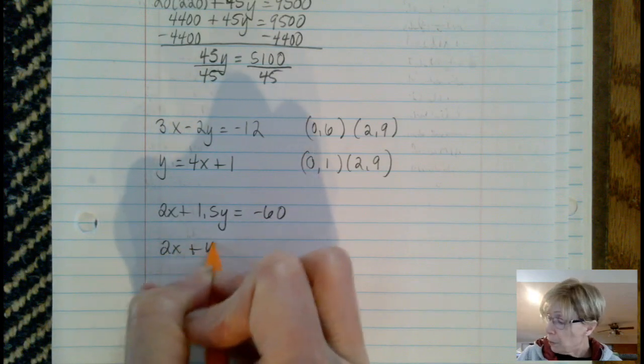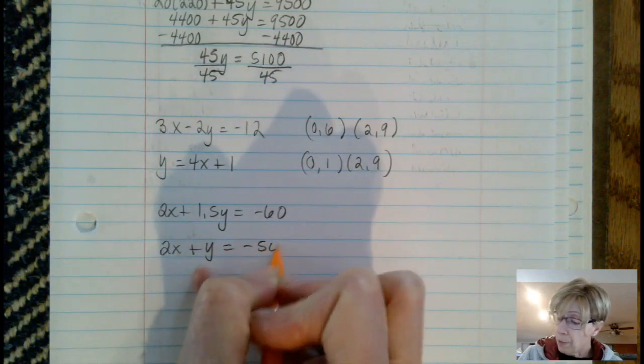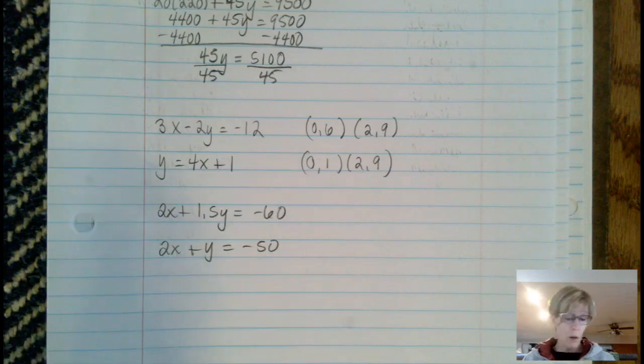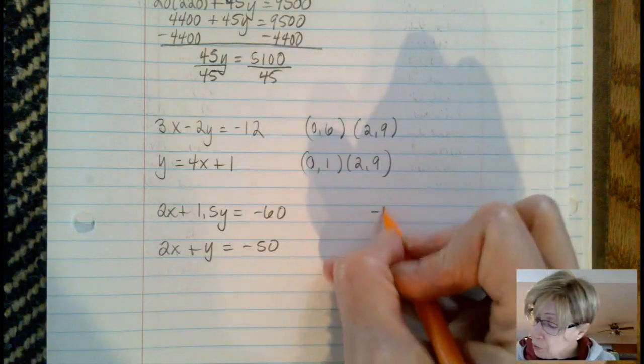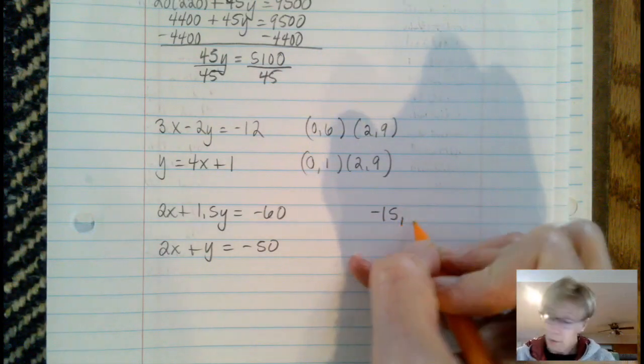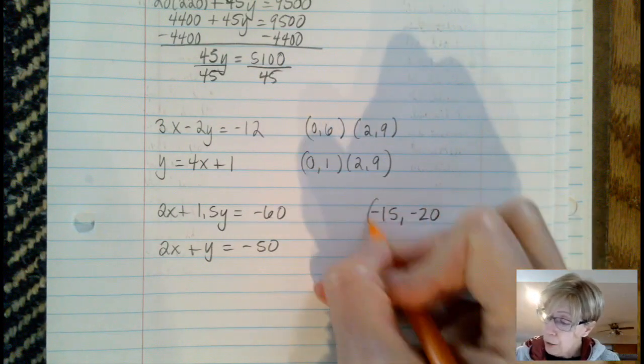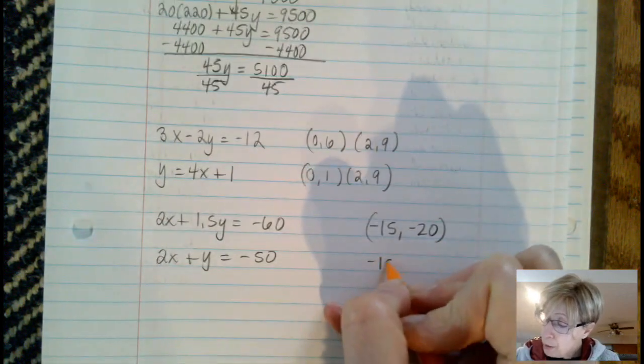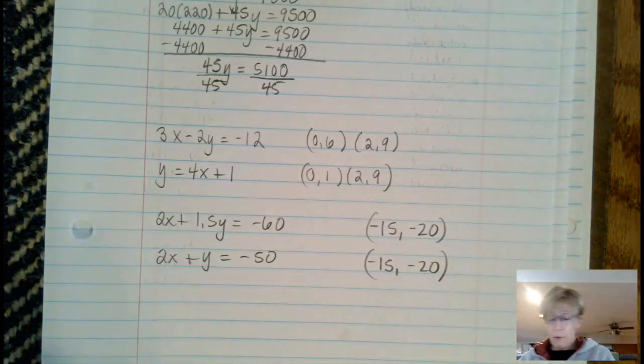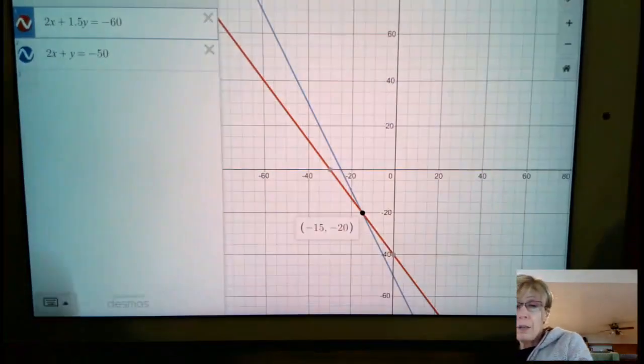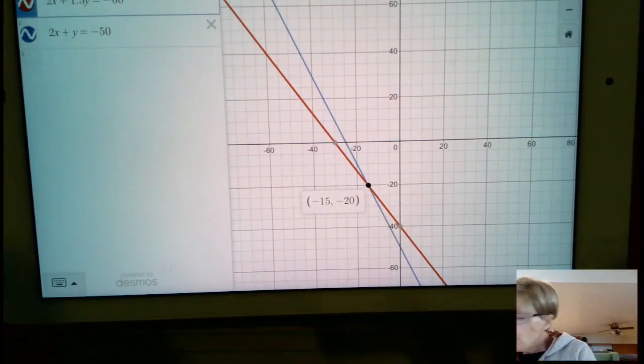What we know, once again when we look back at Desmos, is that each of these is going to cross at negative 15, negative 20. So when we draw in our line, that's going to be one of our points.